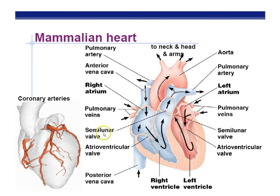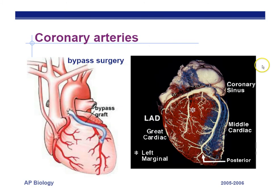The other valve is called semilunar — it looks like a half moon. Semilunar valves prevent backflow of blood from the arteries back into the ventricle. Atrioventricular valves prevent backflow of blood into the atria.